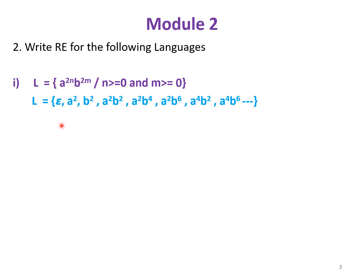The regular expression obtained is (aa)* for a^(2n) since n ≥ 0, followed by (bb)* for b^(2m). When both are taken as star, the first string obtained is epsilon. So the regular expression for this language is (aa)*(bb)*.